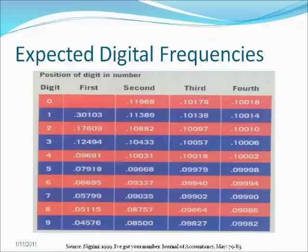In the second column, there is an 11.968% chance that 0 appears in the second digit, an 11.389% chance that 1 appears in the second digit, and so on.